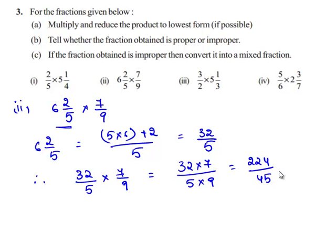The obtained product is an improper fraction since the numerator is greater than the denominator. So now we need to convert 224/45 into a mixed fraction.